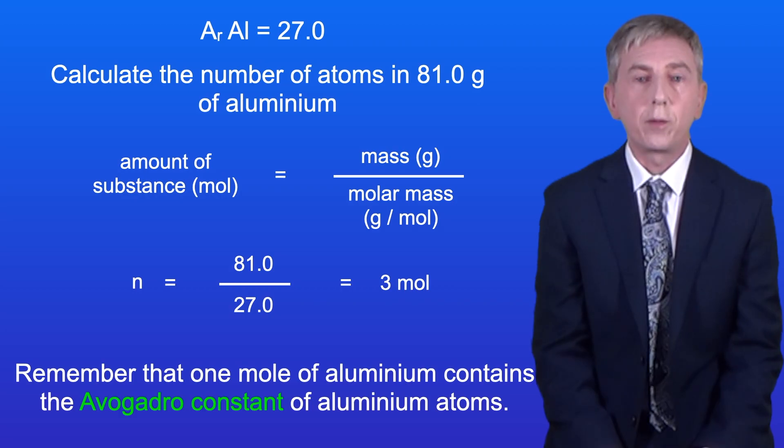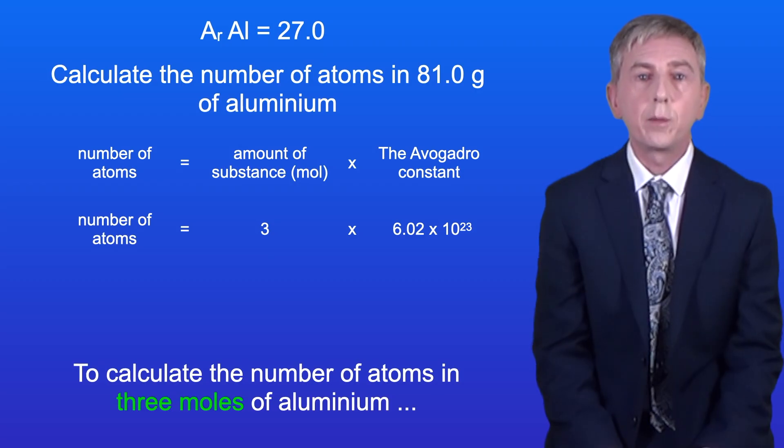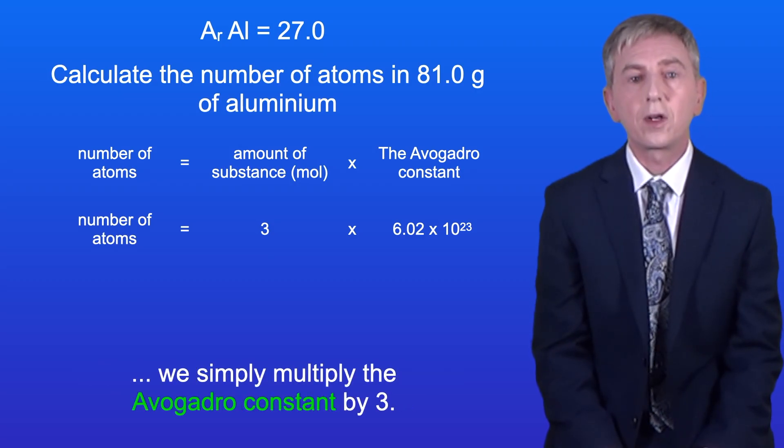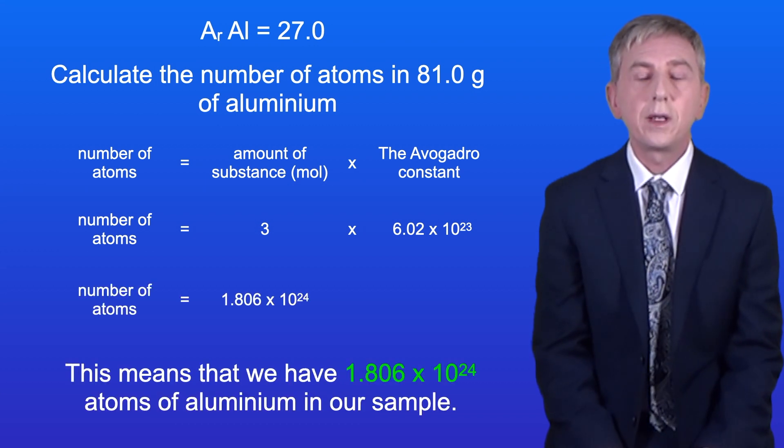Remember that one mole of aluminium contains the Avogadro constant of aluminium atoms. To calculate the number of atoms in three moles of aluminium we simply multiply the Avogadro constant by 3. This means that we have 1.806 times 10 to the power of 24 atoms of aluminium in our sample.